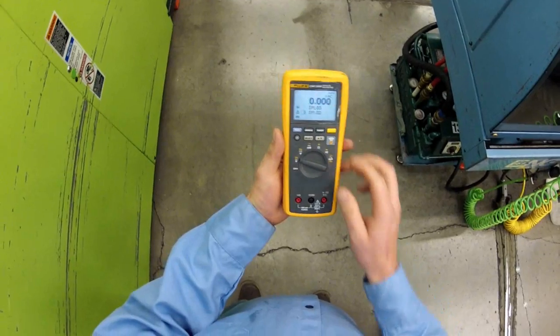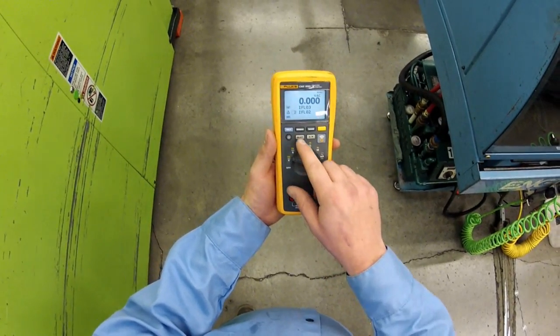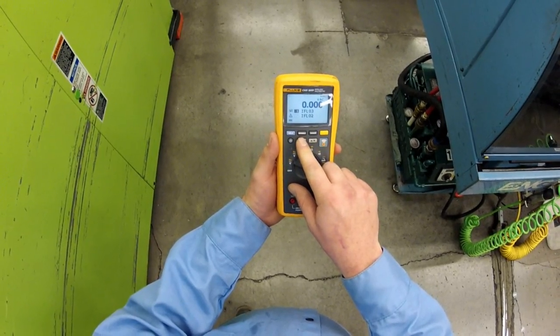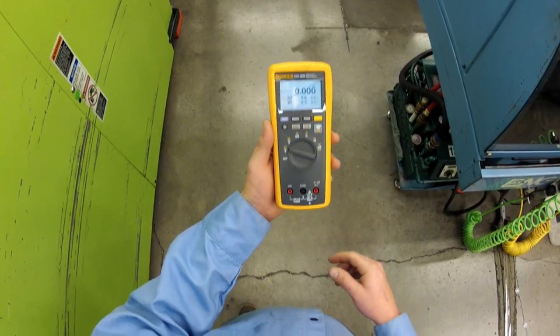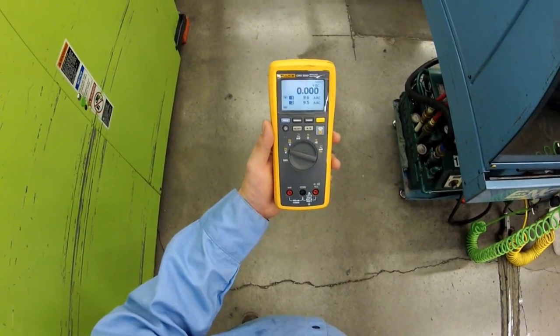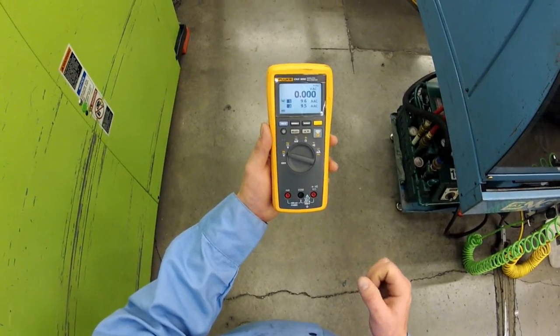Now that we've connected with our two iFlex and wireless modules, we're going to select both of the modules. We're going to hold the up and down button and we can see that both of our heating elements are currently pulling 9.5 and 9.6 amps.